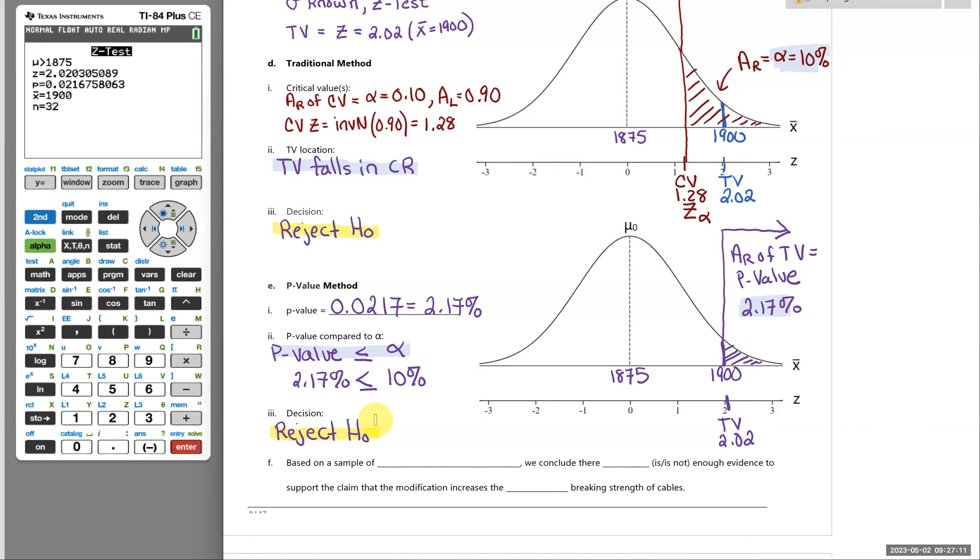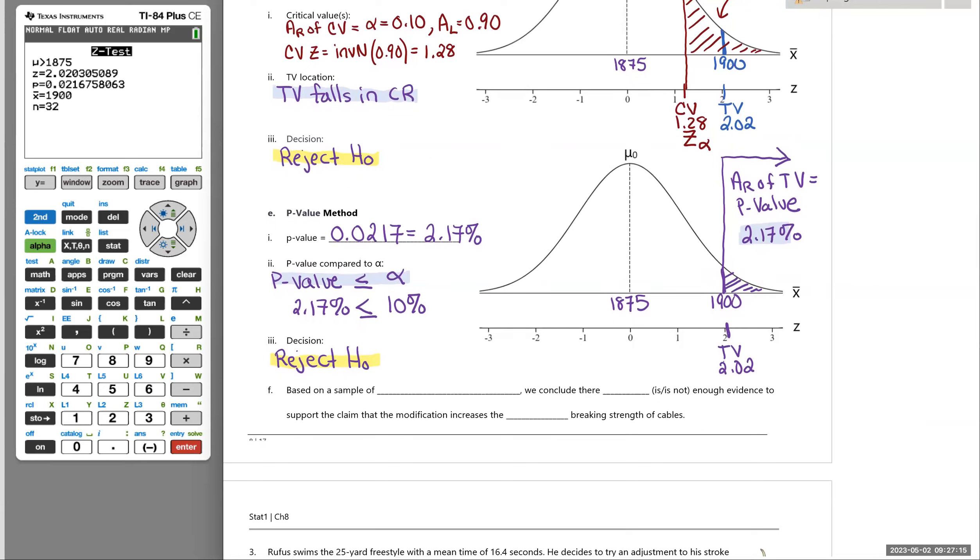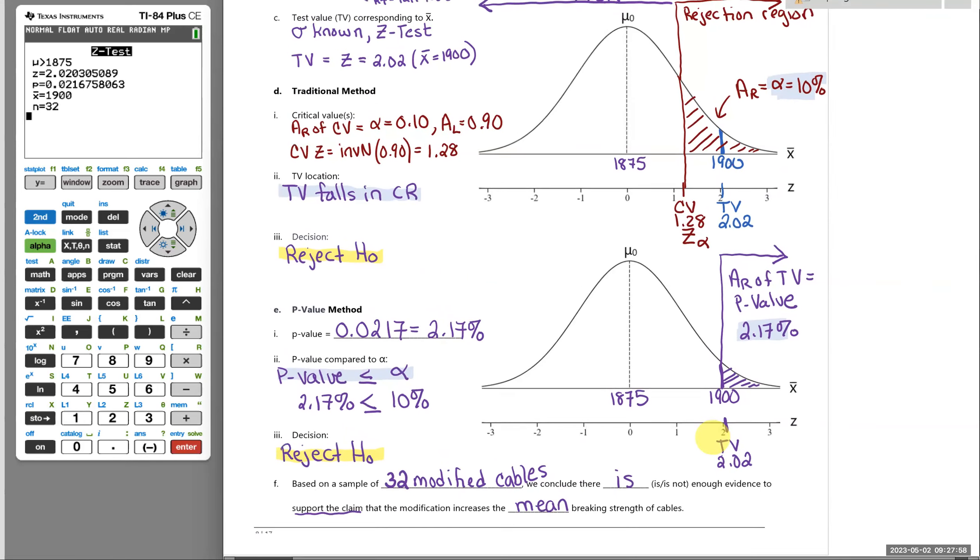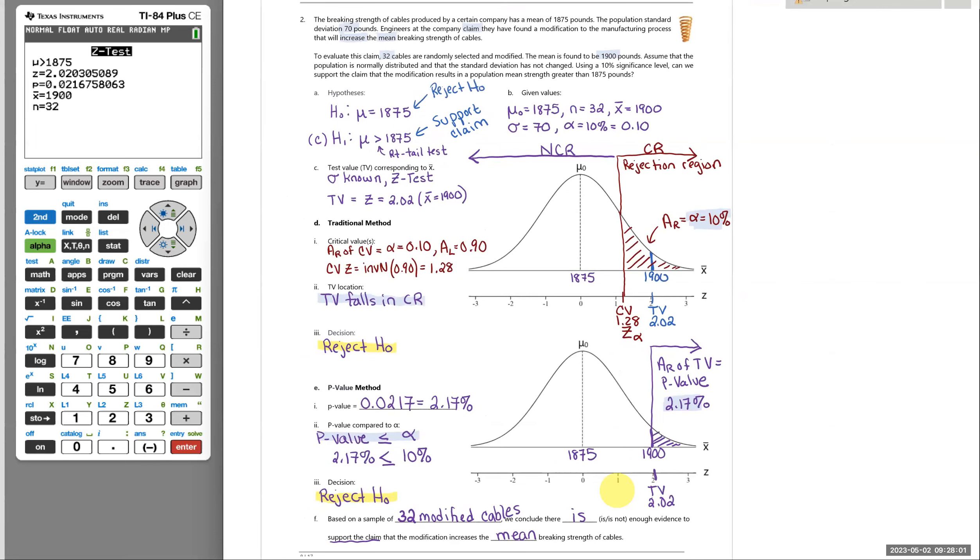All right. And then they would both have the same conclusion. So when we reject the null, we support our claim. So based on a sample of 32 modified cables, we reject the null. So there is enough evidence to support the claim that the modification will increase the mean breaking strength of all cables that are modified. So we're using this sample to say we think that this will be true for all modified cables. Okay. Just giving you there then a picture of a right tail.